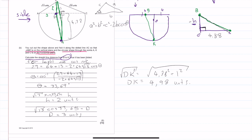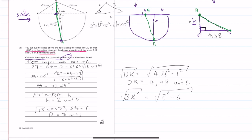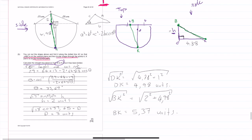Now we know DK = 4.98 units, the height is 2 units, and there's a 90-degree triangle. So we calculate BK using Pythagoras: BK = √(2² + 4.89²), giving BK = 5.37 units.